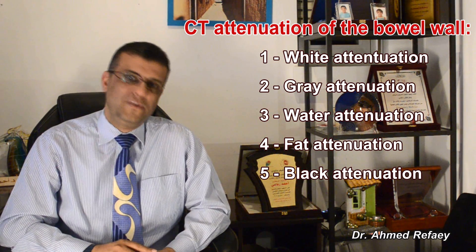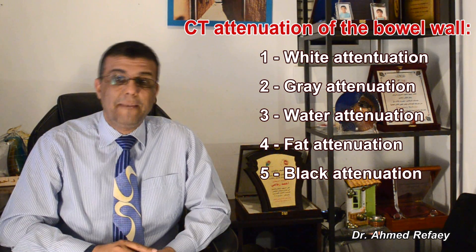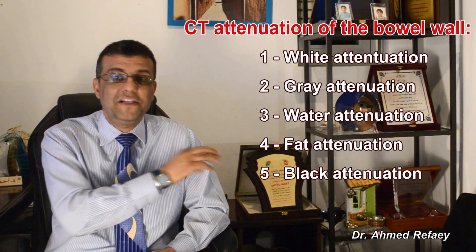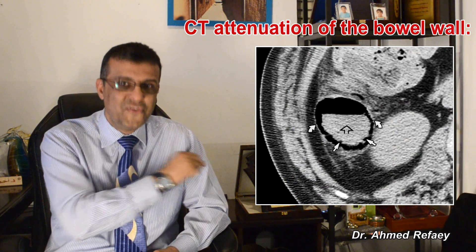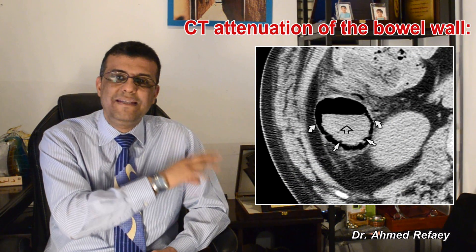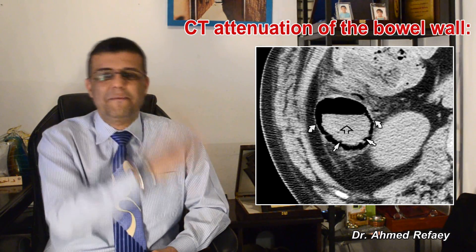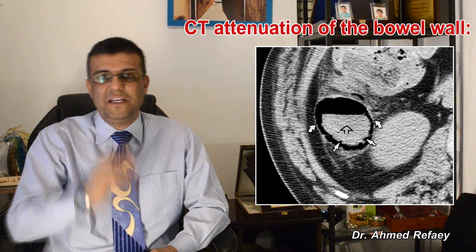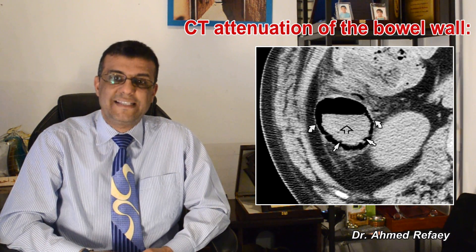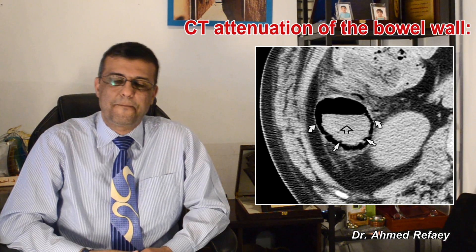The last category is black attenuation, which refers to the presence of intramural gas, as seen in this image. This usually indicates ischemic bowel disease, especially when associated with gas in the portal tracts.